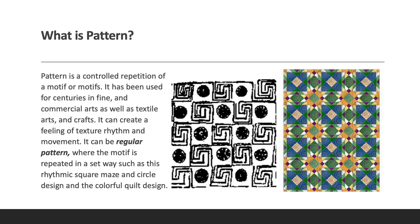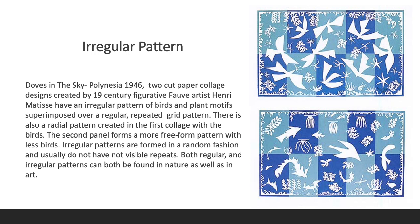Irregular pattern. 'Doves in the Sky,' Polynesia, 1946. Two cut-paper collage designs created by figurative and Fauvist artist Henri Matisse have what we call an irregular pattern. The pattern of the birds and plant motifs are superimposed over a regular repeated grid pattern. There is also a radial pattern created in the first collage with the birds. The second panel forms a more free-form pattern with fewer birds. Irregular patterns are formed in a random fashion and usually do not have visible repeats. Both regular and irregular patterns can be found in nature as well as in art.